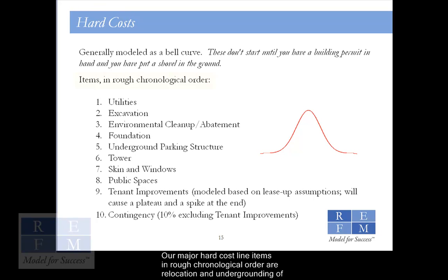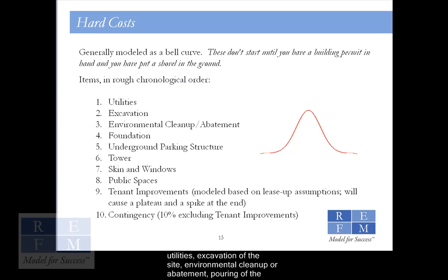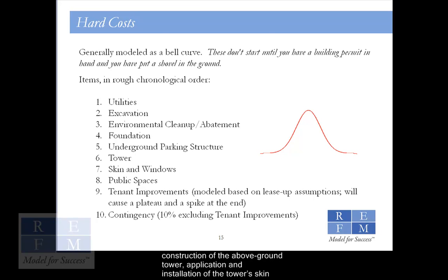Our major hard cost line items in rough chronological order are: relocation and undergrounding of utilities, excavation of the site, environmental cleanup or abatement, pouring of the foundation, construction of the underground parking structure if the building has one, construction of the above-ground tower, application and installation of the tower's skin and windows, and then construction of the public spaces.